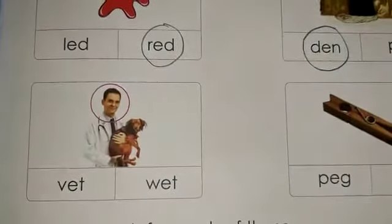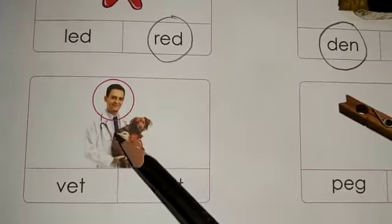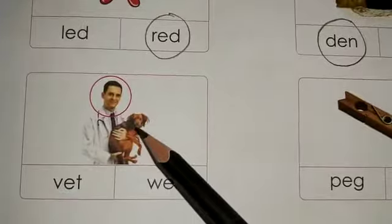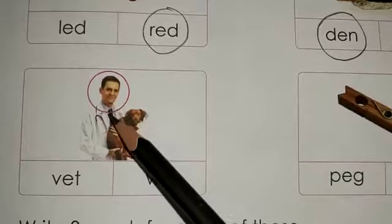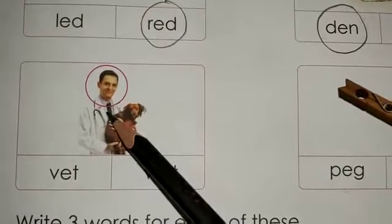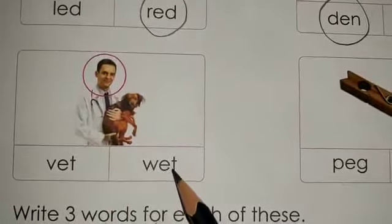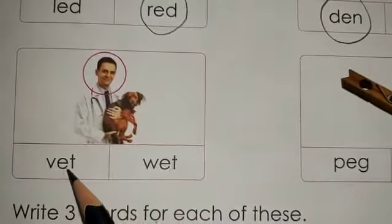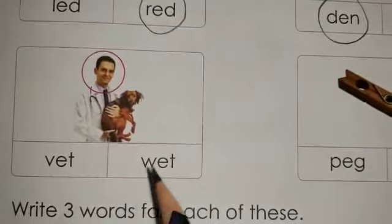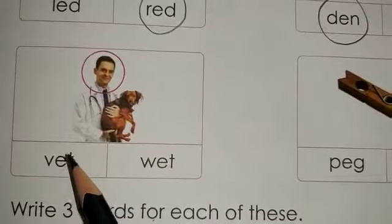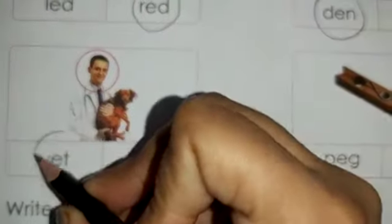Now come to the next picture and try to identify it. There is a doctor who is holding a dog in his hand — which kind of doctor is this? Is it vet or wet? I have taught you E-T sound words — both these words sound the same but have different meanings. This is a vet; vet means a veterinary doctor. So we are going to encircle the word vet.